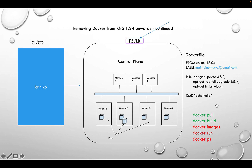Most of the time you need Docker on your local environment — Docker Desktop is popular for first-level unit testing to make sure your containers are running with no issues before deploying to Kubernetes clusters. Normally you don't need it on the worker nodes.